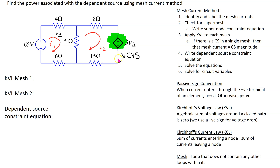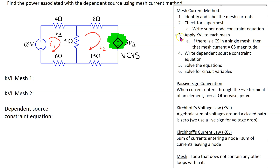The circuit contains one independent voltage source and one dependent voltage source. Voltage sources cannot give rise to a supermesh, so there is no supermesh in this circuit. We proceed to step three, which is to apply Kirchhoff's Voltage Law to each mesh.